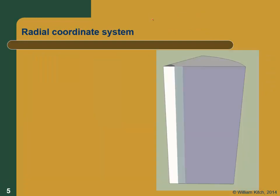We're going to model this in a radial coordinate system. Although it's a three-dimensional problem, we can model it in two dimensions using an axisymmetric system. On the inside we have the drain, also called the well. Right next to that is the smear zone — the lance that goes down is much bigger than the drain diameter, so the soil right around the drain gets disturbed. Beyond that we have R_E, the effective drainage radius. We use R_W for the radius of the well, R_S for the smear zone radius, and R_E for the effective radius of the drained area.